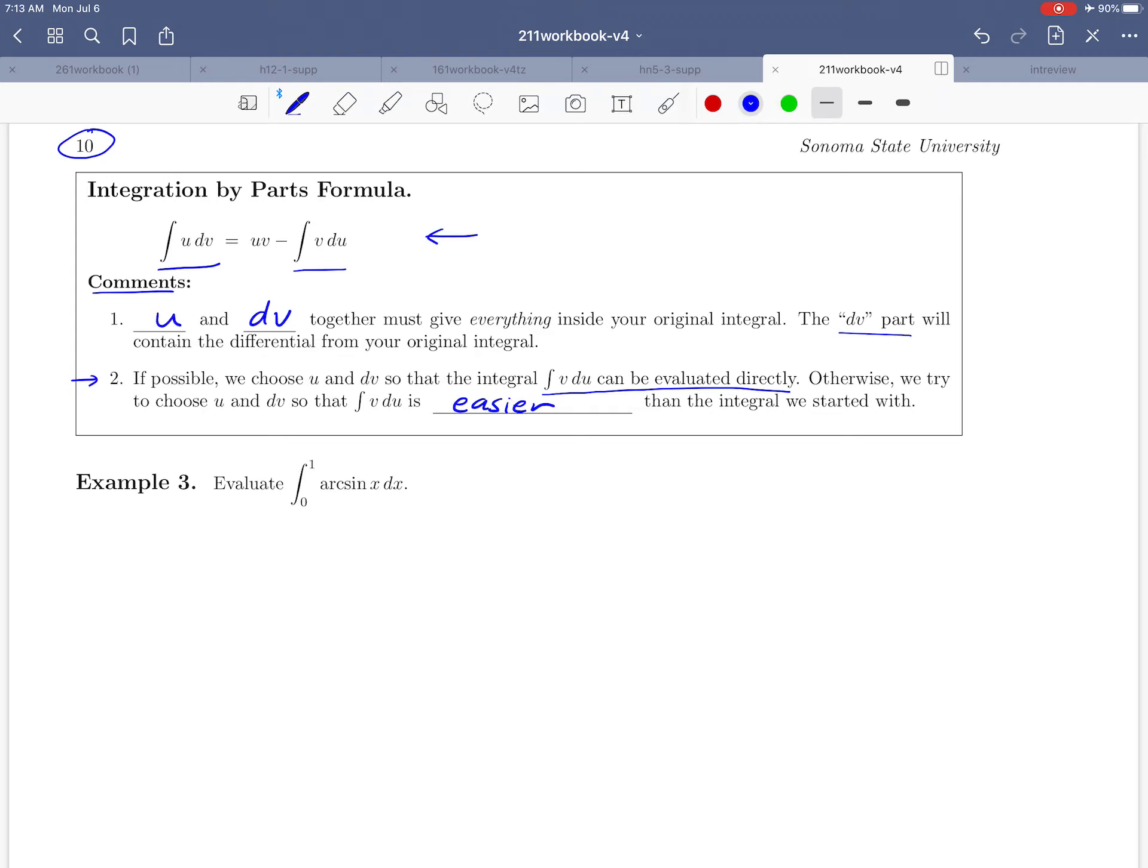So what I'd like to do now is to work through example three together. You might see some elements of what we just discussed in this example. We'd like to evaluate the integral from zero to one of arc sine of x dx.